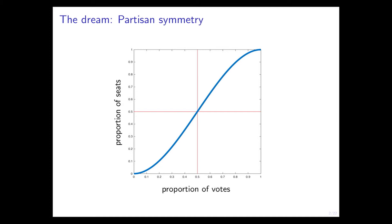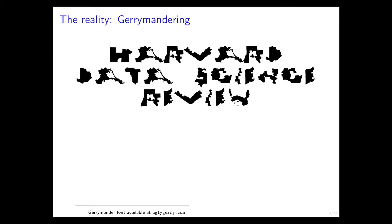What happens in the real world is different. There's this phenomenon called gerrymandering. Folks like to draw boundaries of districts in a way that helps their party get more seats. This is actually a font available online, so you can text your friends with fonts made purely of congressional districts.